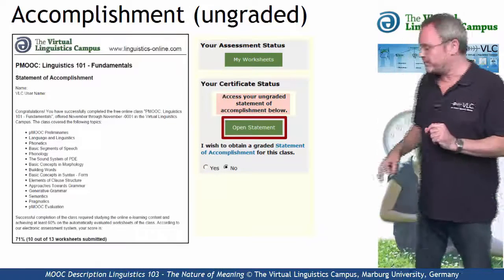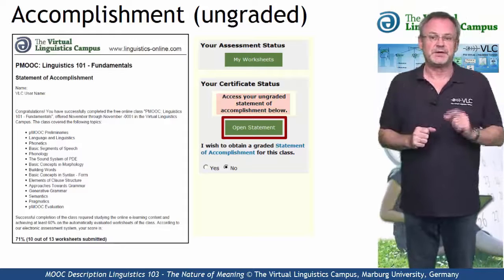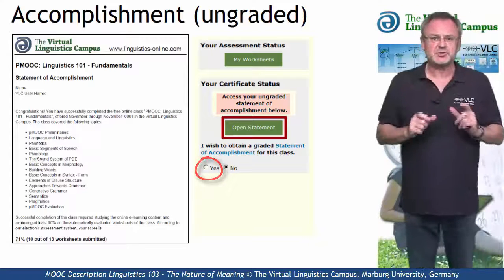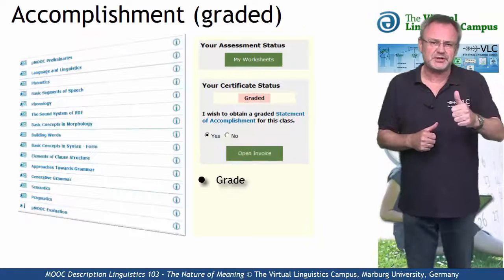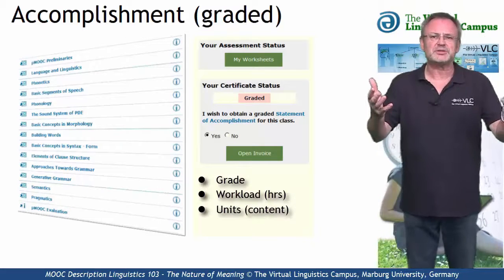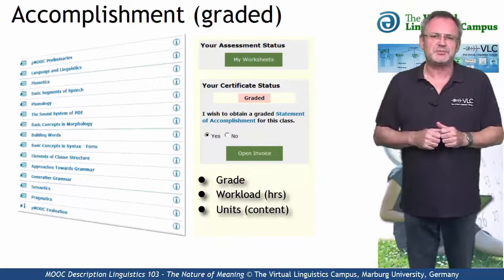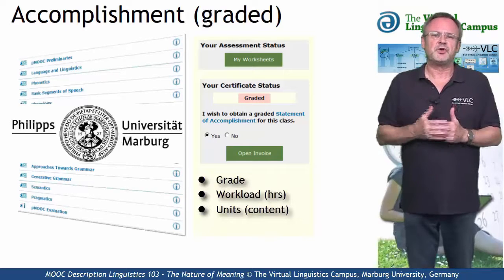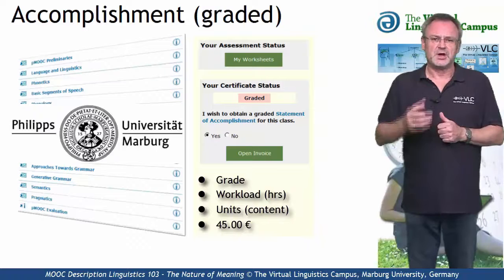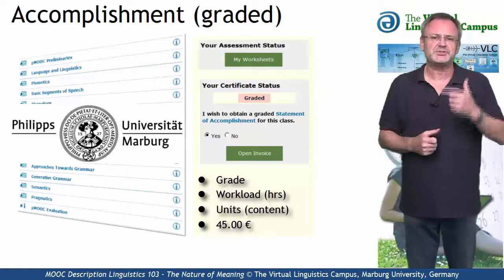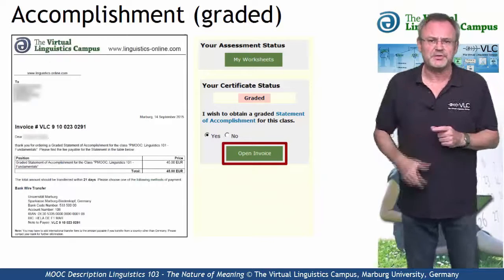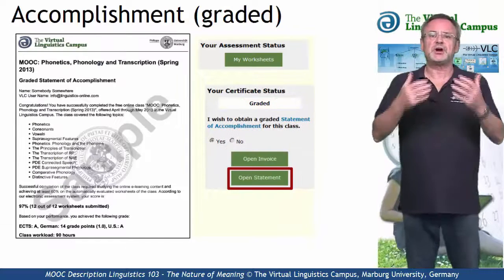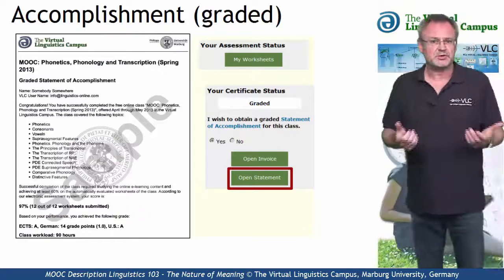A simple click on the Open Statement button and the certificate is yours. If you want to obtain a graded Statement of Accomplishment, select Yes. This most advanced certification option includes your precise grade, the workload in hours, and a complete list of all the tasks you successfully submitted. This graded Statement of Accomplishment is issued by Marburg University in conjunction with the Virtual Linguistics Campus, and it involves a fee of currently 45 euros. Once you have satisfied the conditions and decided to obtain such a certificate, you first open the invoice and transfer the money to Marburg University. Once your payment has been accepted, you can download your personal graded Statement of Accomplishment via mouse click.